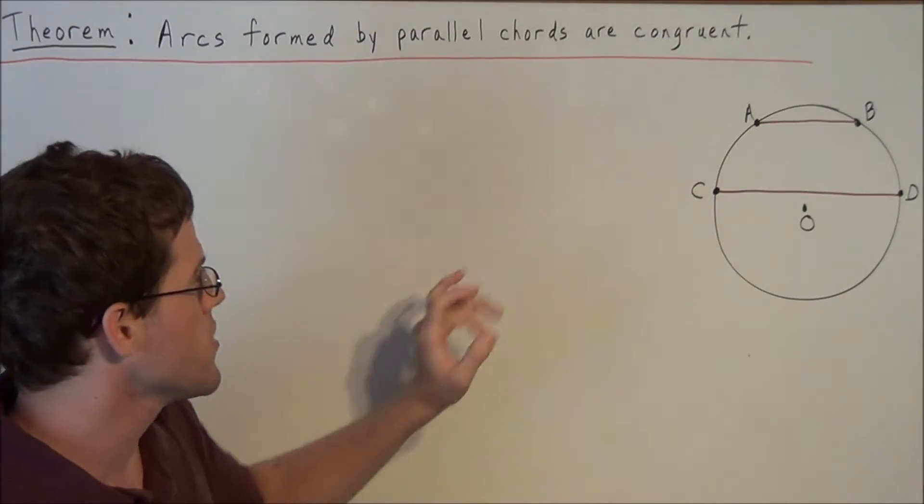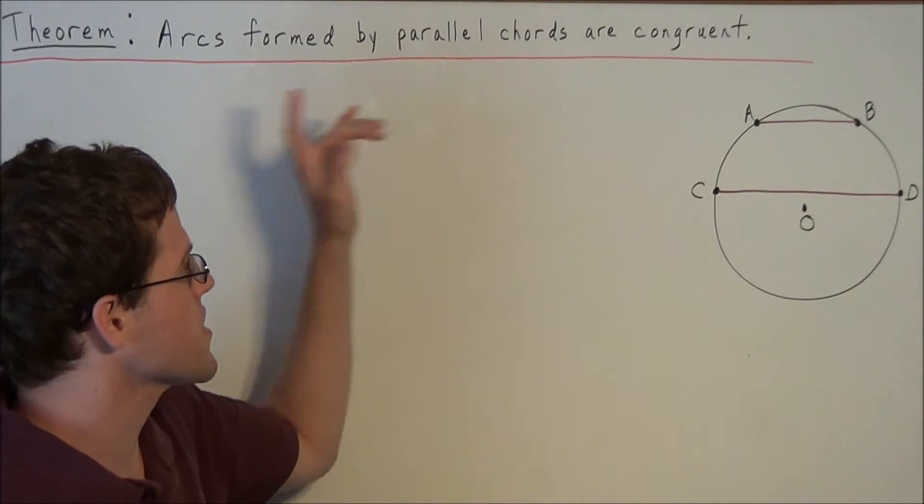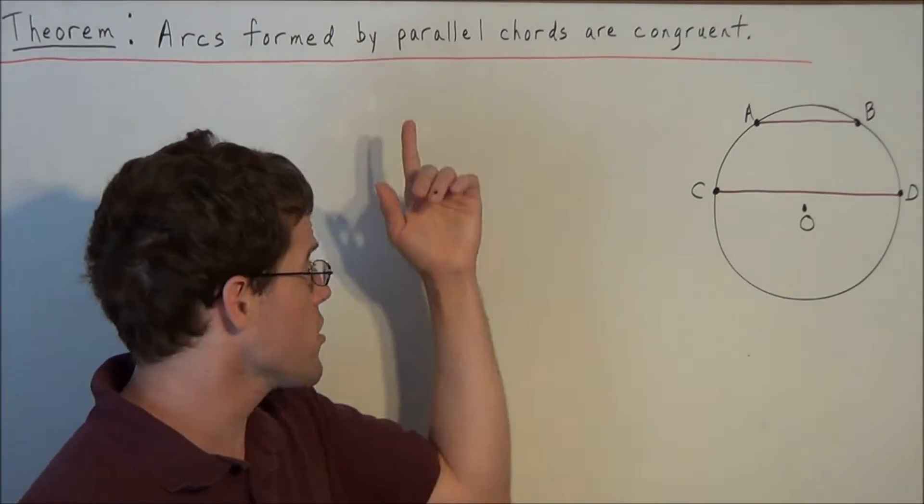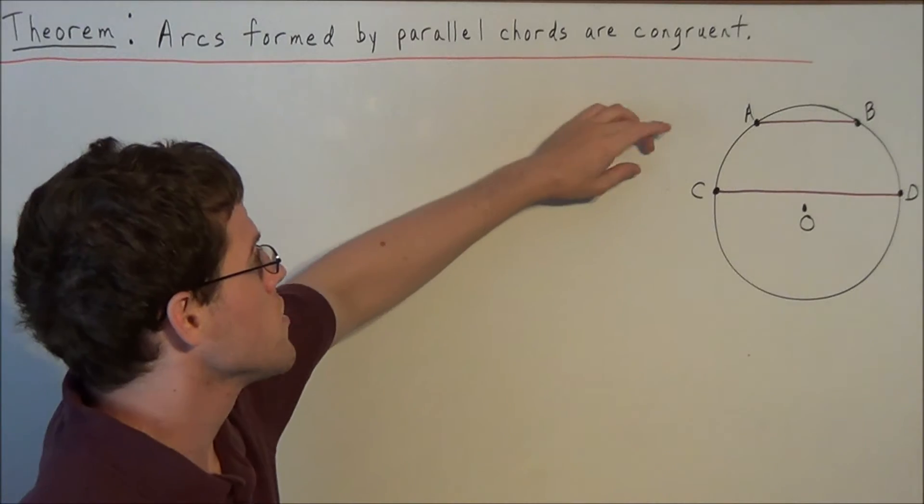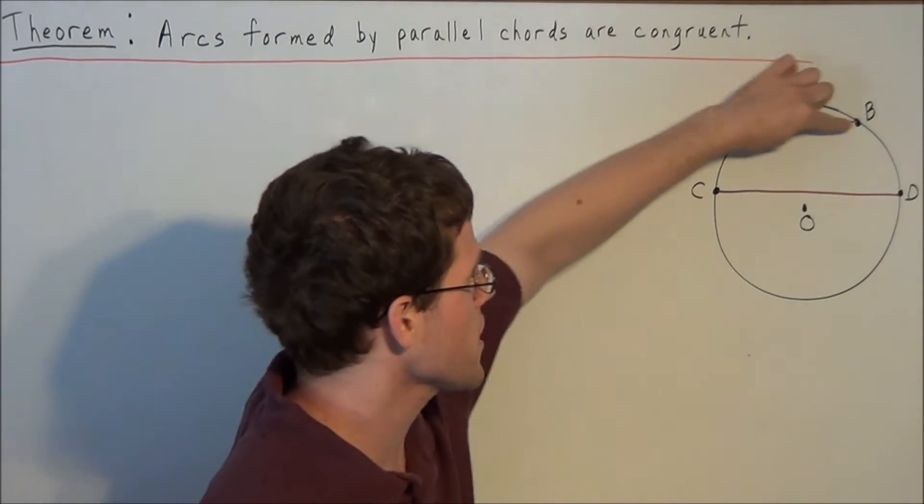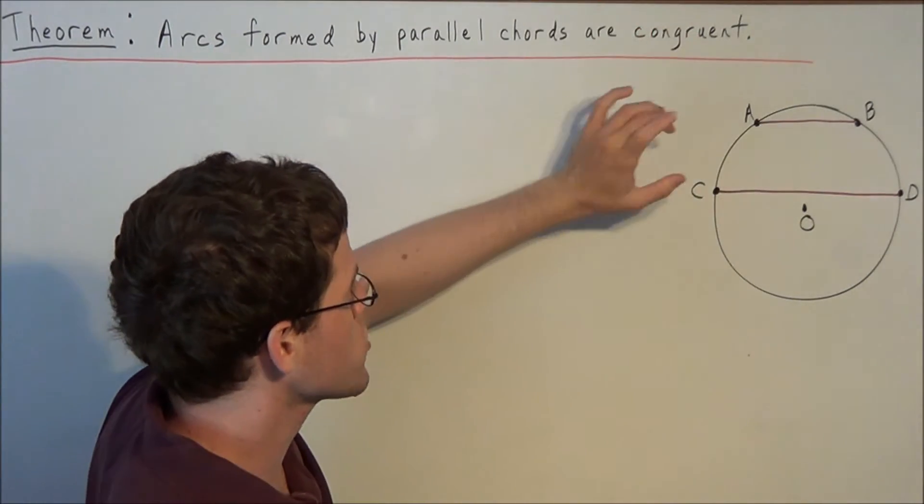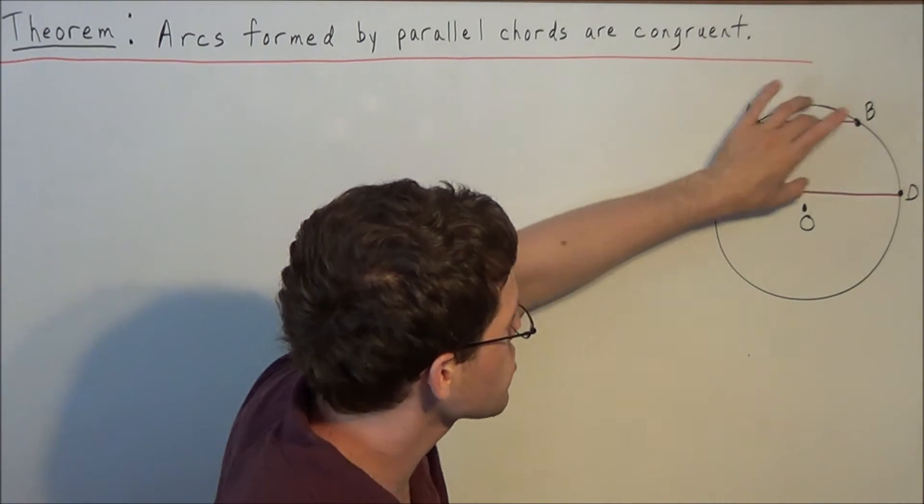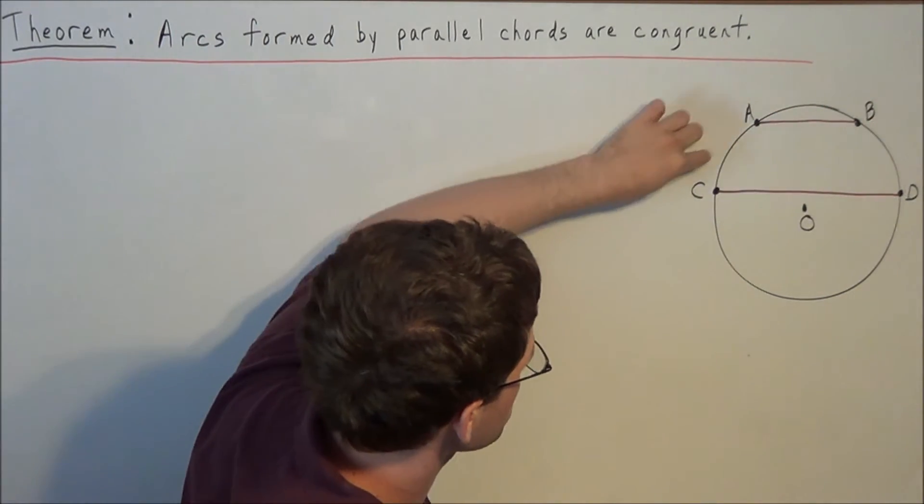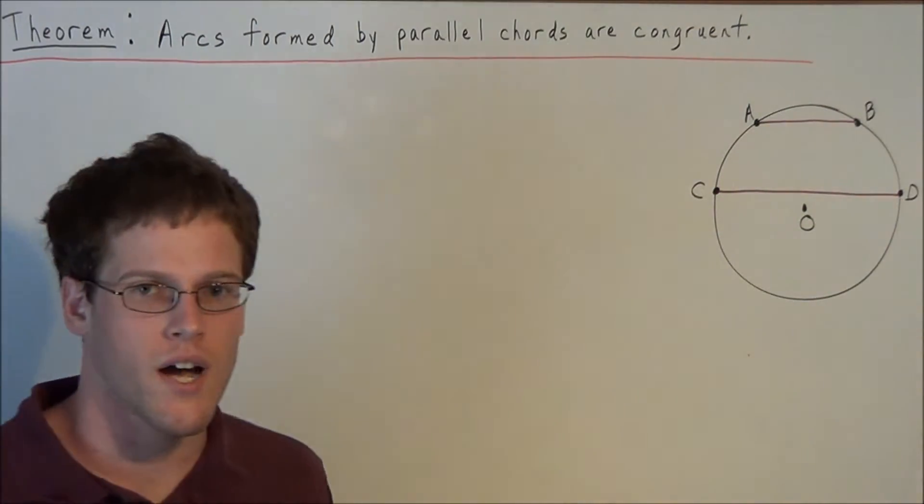So in this diagram here, I went ahead and prepared this diagram to get a visual of what this theorem is actually asking us to prove. We have two parallel chords, AB and CD, and we're trying to show that if these two chords are parallel, then the arcs intercepted by these chords are congruent.